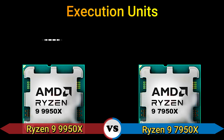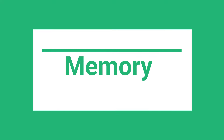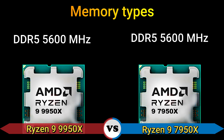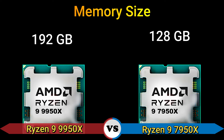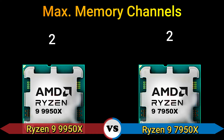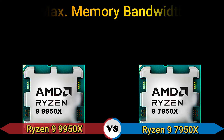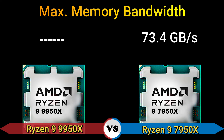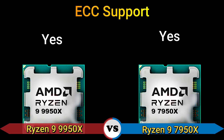Part 4: Memory. Memory type: DDR5 at 5,600 MHz. Memory size: 192 GB and 128 GB. Max memory channels: 2. Max memory bandwidth: 73.4 GB/s. ECC support: yes. Thanks for watching.